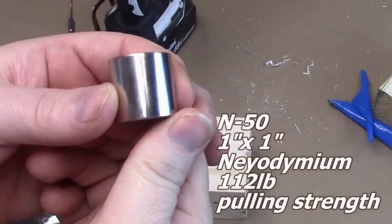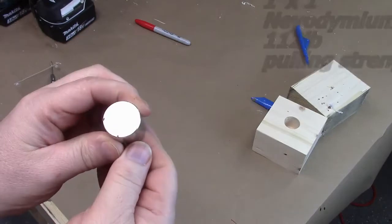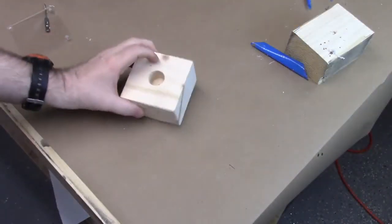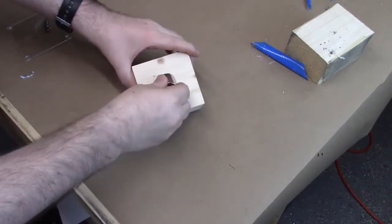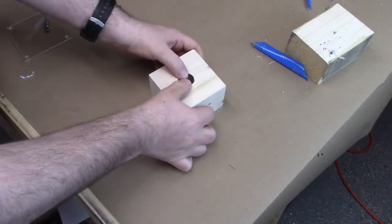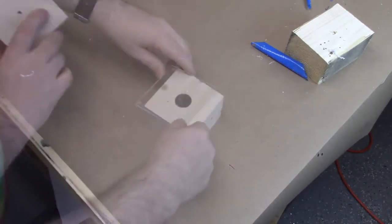So this would be an N50 neodymium magnet, one inch by one inch. Got about a hundred and twelve pounds of pulling strength. So it's a pretty strong little magnet there. And on the bottom I put a little access hole in case I need to pop it out later.